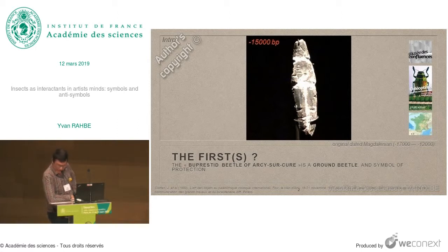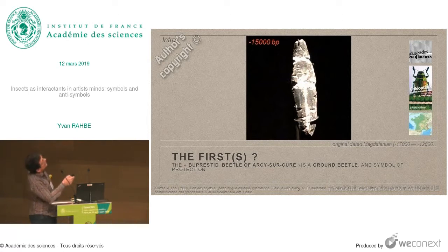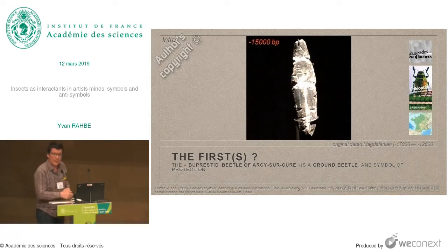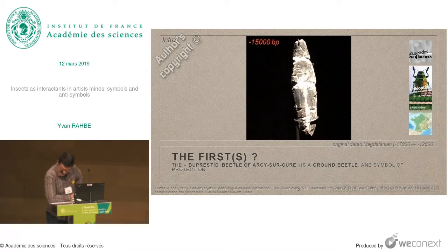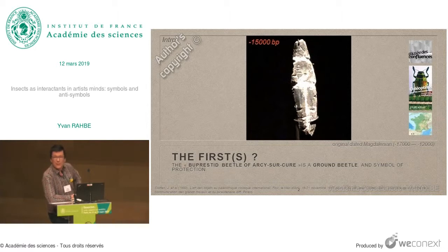It represents a ground beetle, although it is named Beprestit. You see the head, the three parts, the thorax and the three layers, and it's probably a lower face with the abdomen. It is thought to be a shamanic instrument, which is a mixture of art, religion, and medicine.